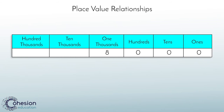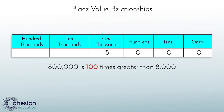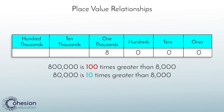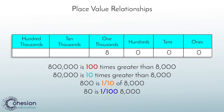Using this chart, we can make the following statements. Eight hundred thousand is one hundred times greater than eight thousand. Eighty thousand is ten times greater than eight thousand. Eight hundred is one tenth of eight thousand. Eighty is one one-hundredth of eight thousand, and eight is one one-thousandth of eight thousand.